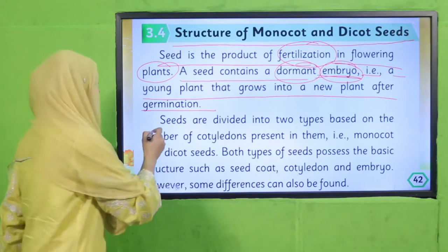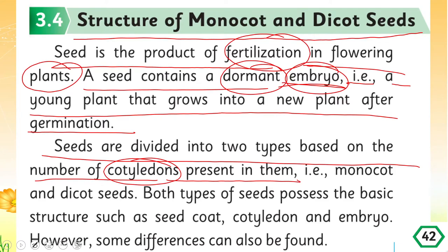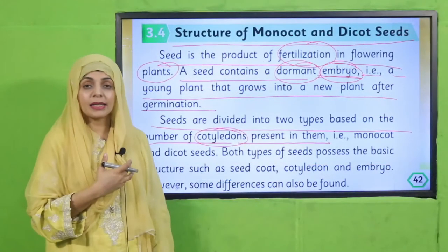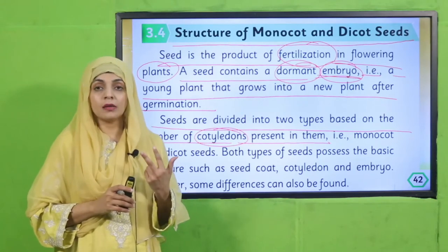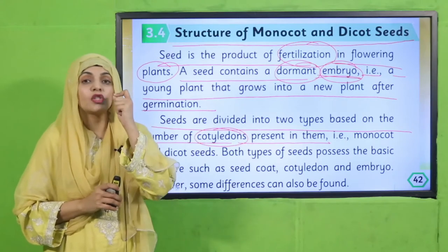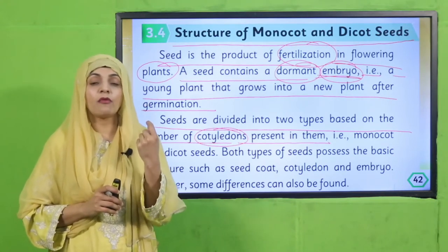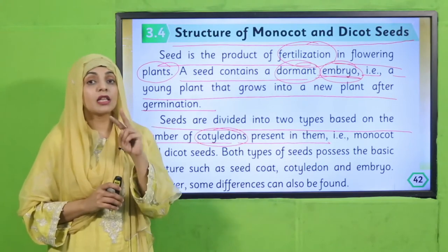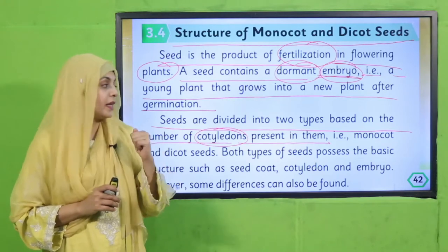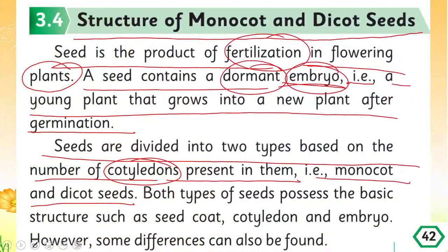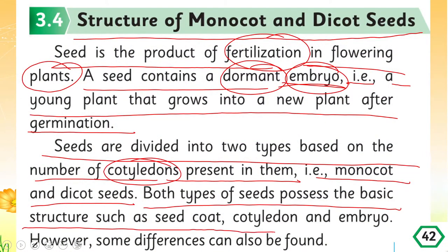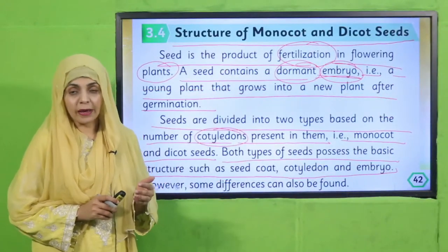Seeds are divided into two types based on the number of cotyledons present in them. Mono means one — a monocot seed has one cotyledon leaf. A dicot seed has two cotyledon leaves. Both monocot and dicot seeds possess the basic structure: seed coat, cotyledon, and embryo. However, some differences can also be found between them.